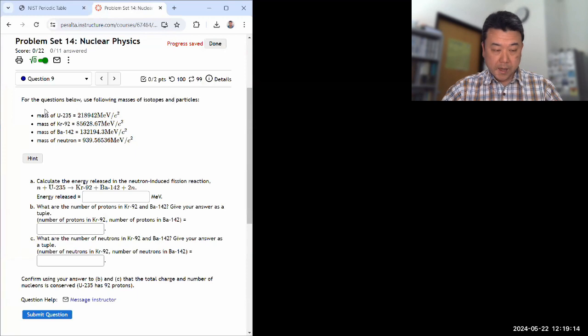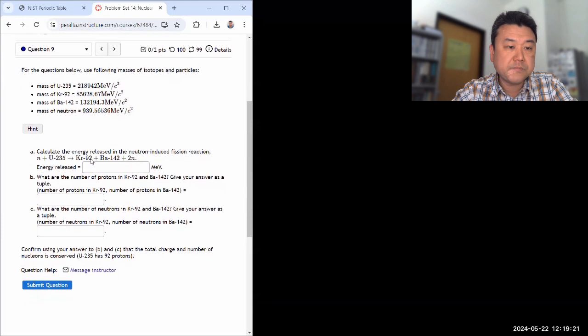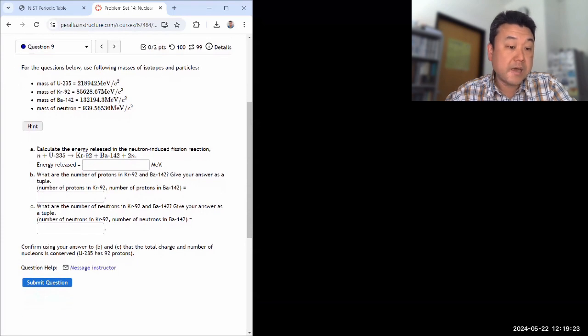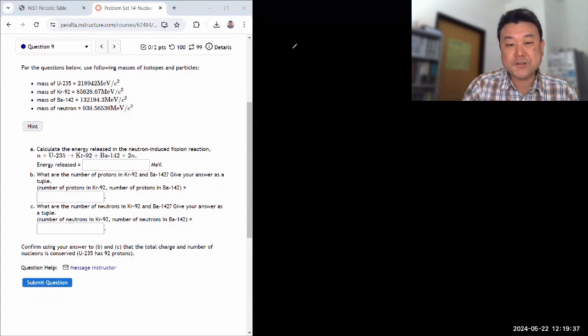So okay, so we have rest energies of these particles, and I think we're going to need that as we answer parts A, B, C. So A asks, calculate the energy released in the neutron-induced fission reaction. Okay, so this almost reads like a chemical reaction, and that is frankly what it is. It's a reaction, it's a nuclear reaction.